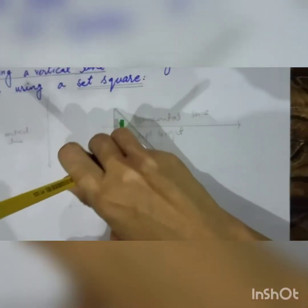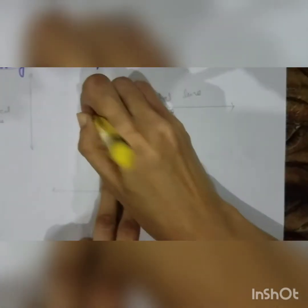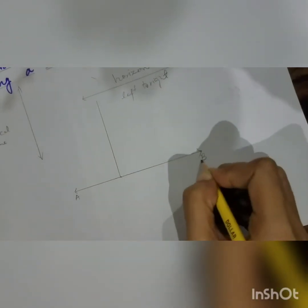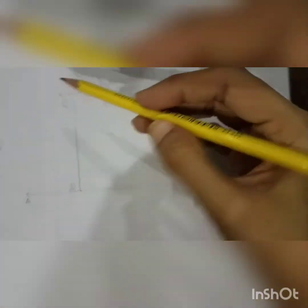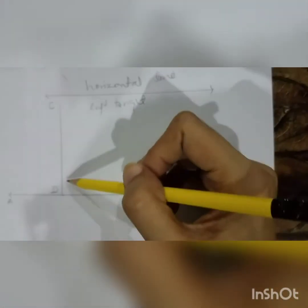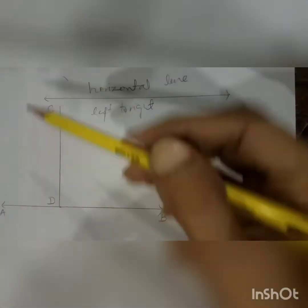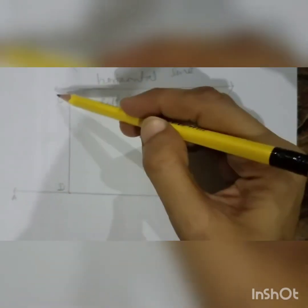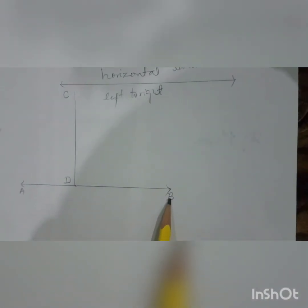After sliding the set square, you are going to draw a straight line and mark the points. This line is AB, and the vertical line is CD. You can see that line CD is a vertical line on horizontal line AB.